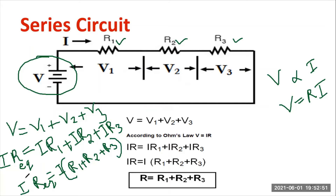On the LHS side there is one current I, and on the RHS side the same current is flowing, so the I terms on both sides cancel. What remains is: R equivalent equals R1 plus R2 plus R3. If all resistance values are equal, then it becomes R plus R plus R equals 3R. If n number of resistances are connected in series, you can write n times R.